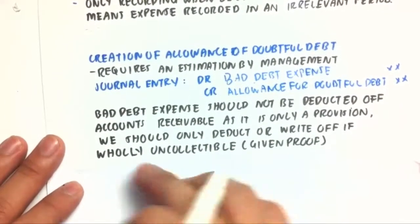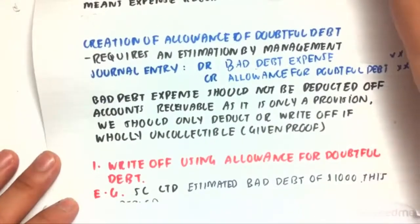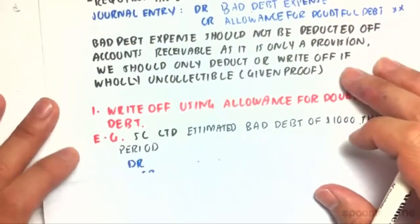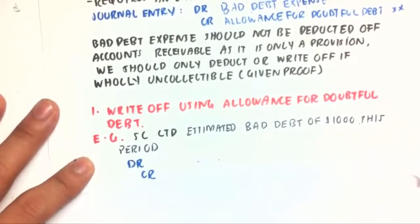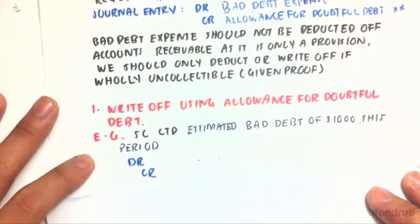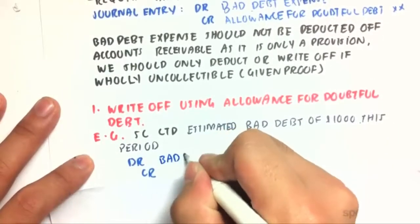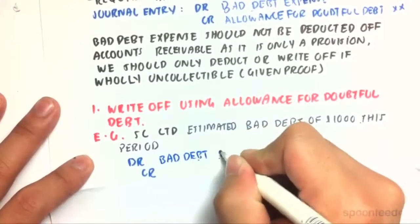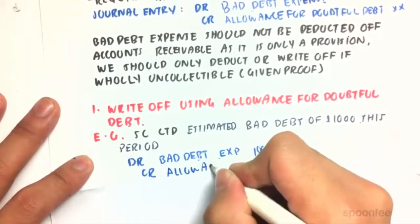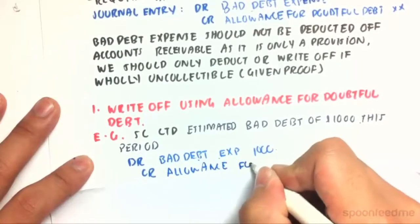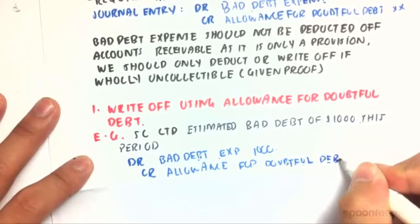We should only write off when we know that they won't pay us back, and when we've been given proof of that. So how do we write off? Method one is writing off using the allowance for doubtful debt method. First, we need to create our doubtful debt account. SCLTD estimated bad debt of $1,000 this period, so we debit bad debt expense $1,000 and credit allowance for doubtful debt $1,000.